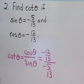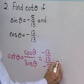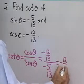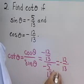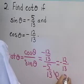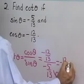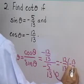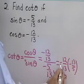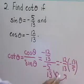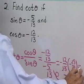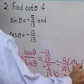So I end up with negative 12 thirteenths divided by negative 5 thirteenths, which is going to be negative 12 thirteenths times the reciprocal of negative 5 thirteenths, which gives negative 13 fifths. Negative times a negative is positive, my thirteenths divide out, and I end up with simply 12 fifths.